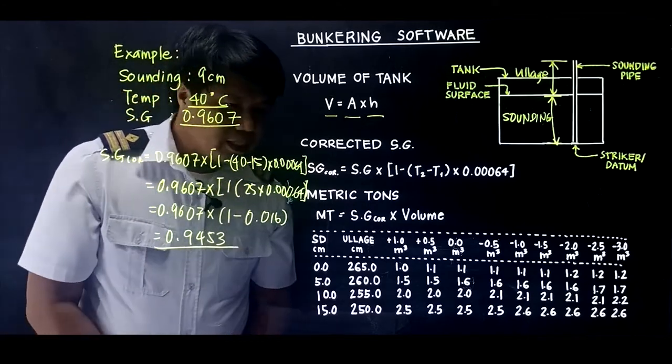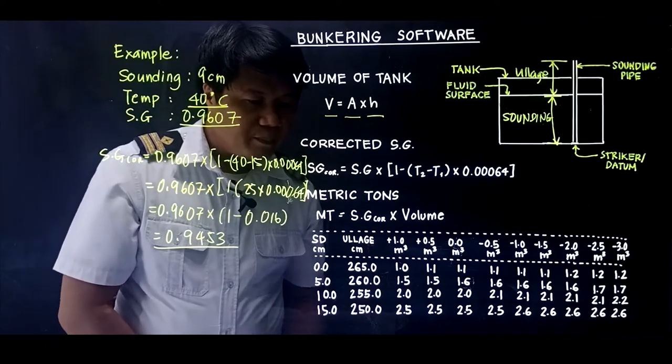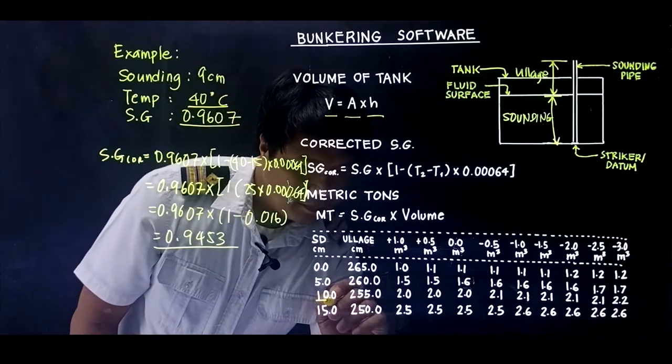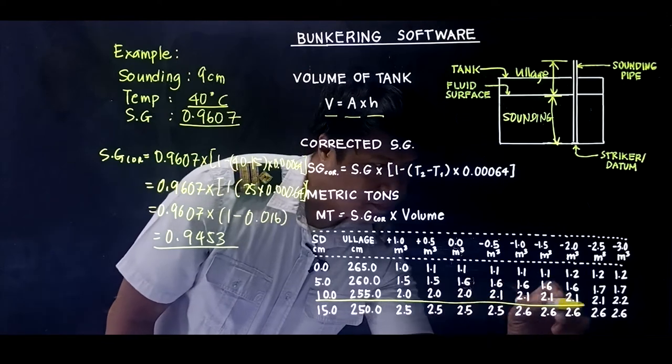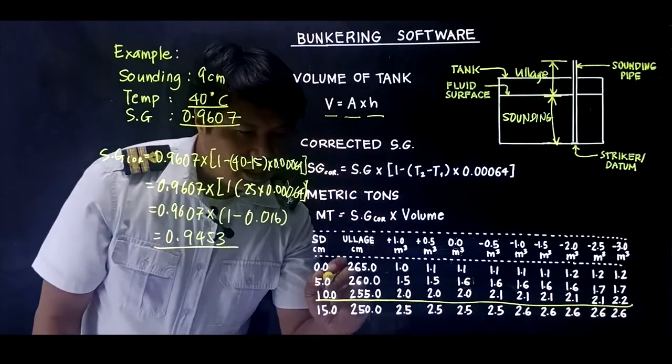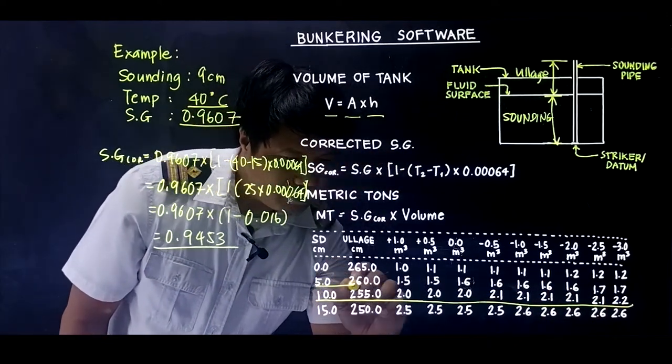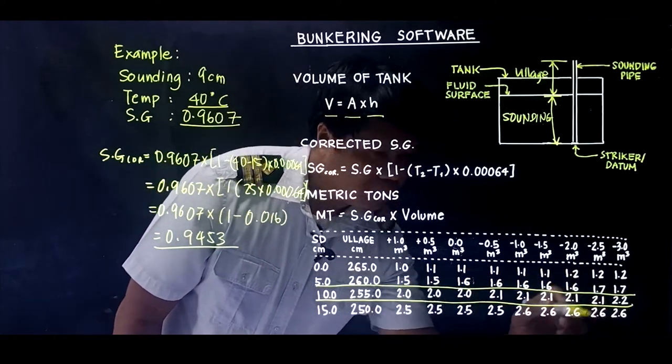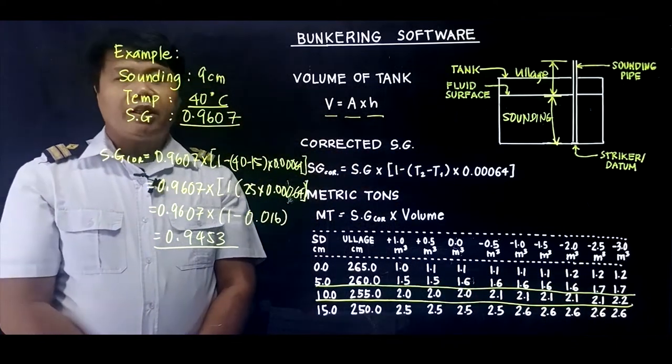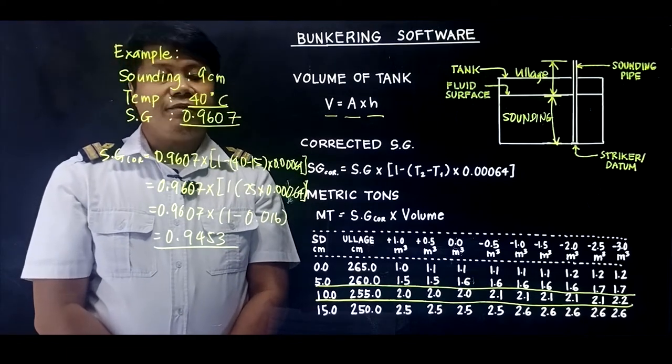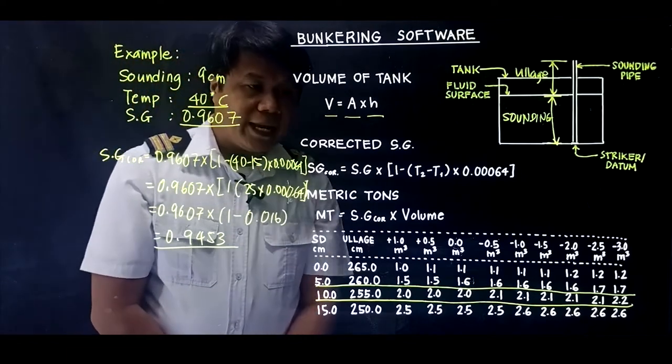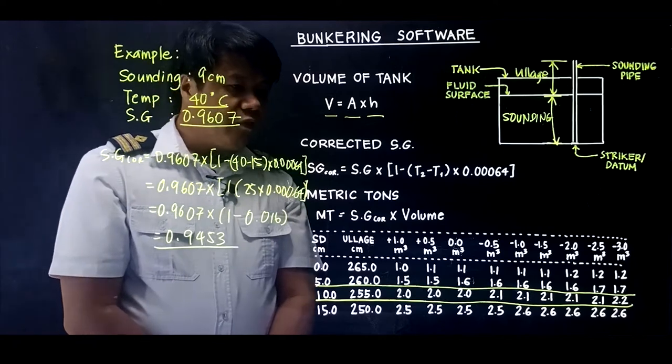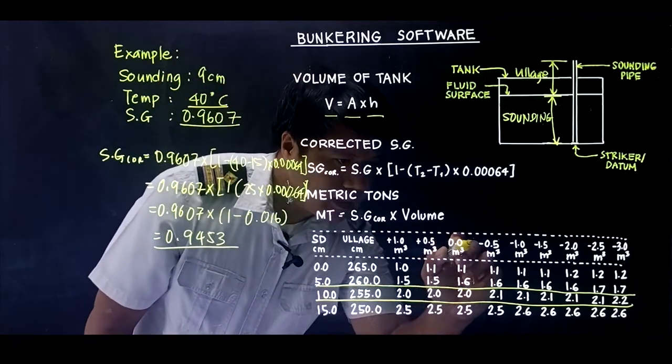So we have the sounding for 10 cm and the sounding for 5 cm. So we have the same. The volume is in even keel. So we need to take the volume from the 0 trim.